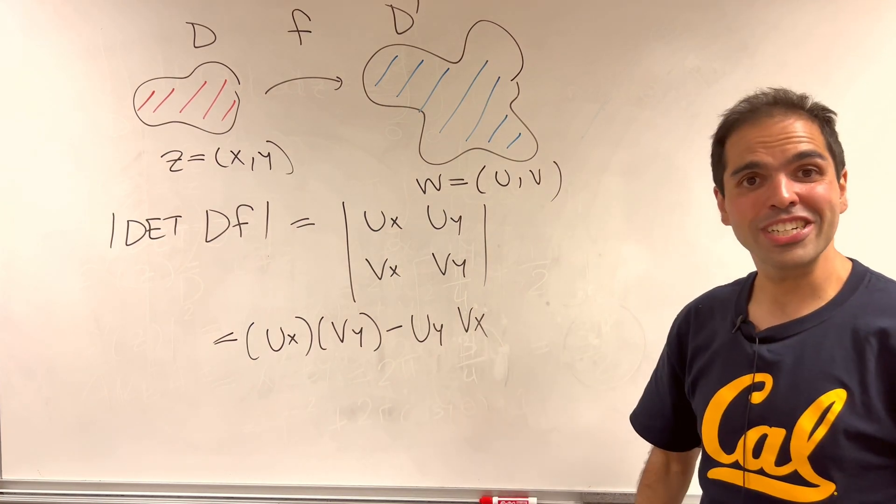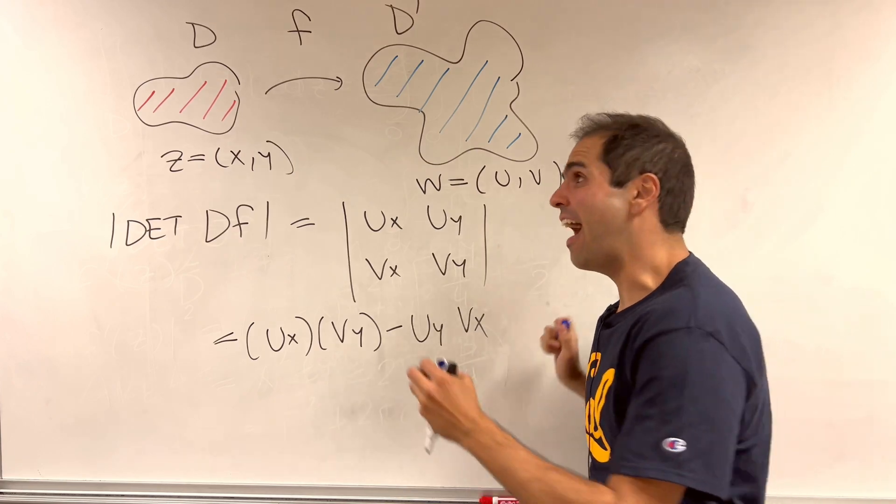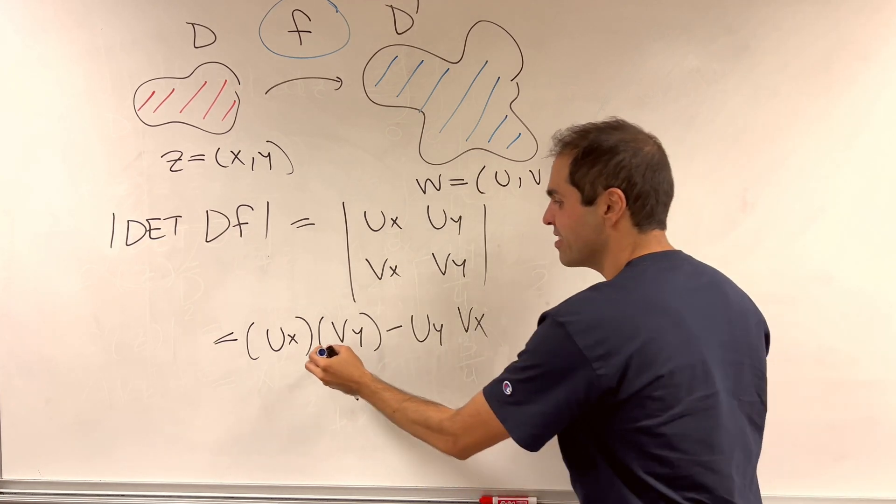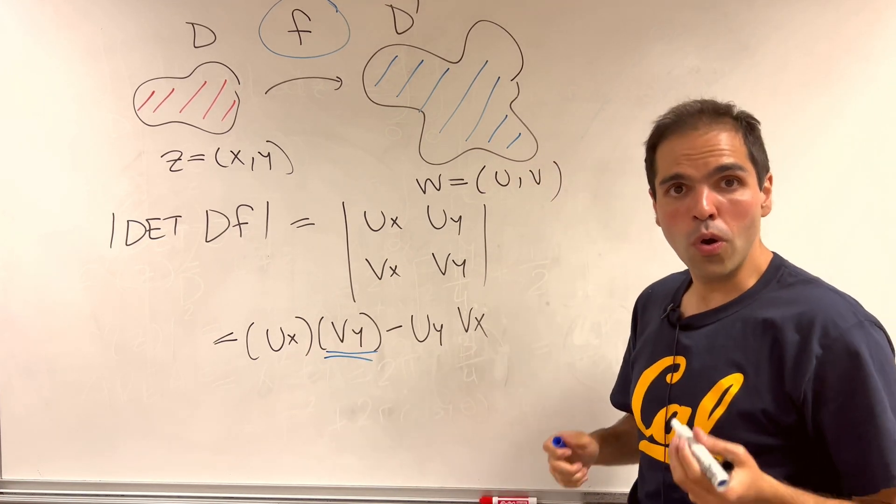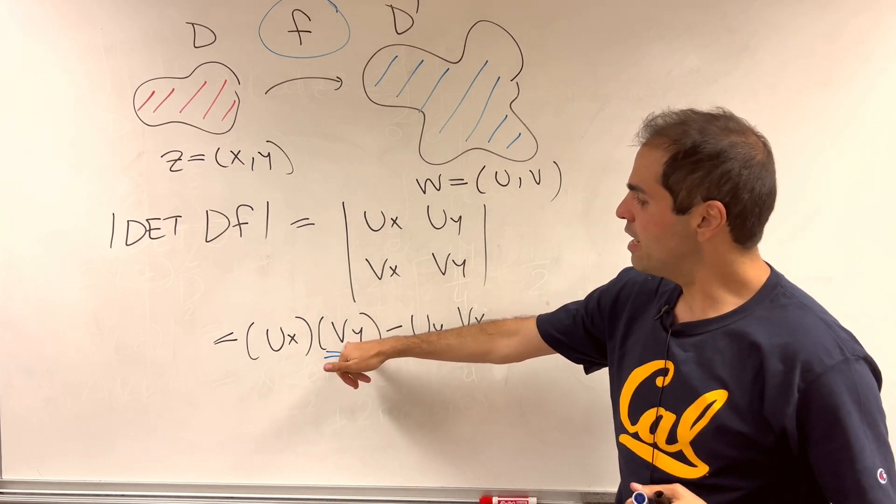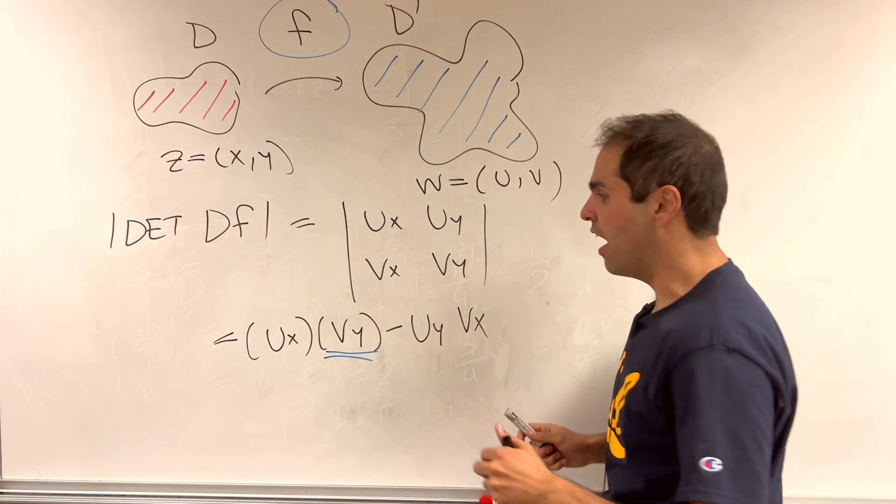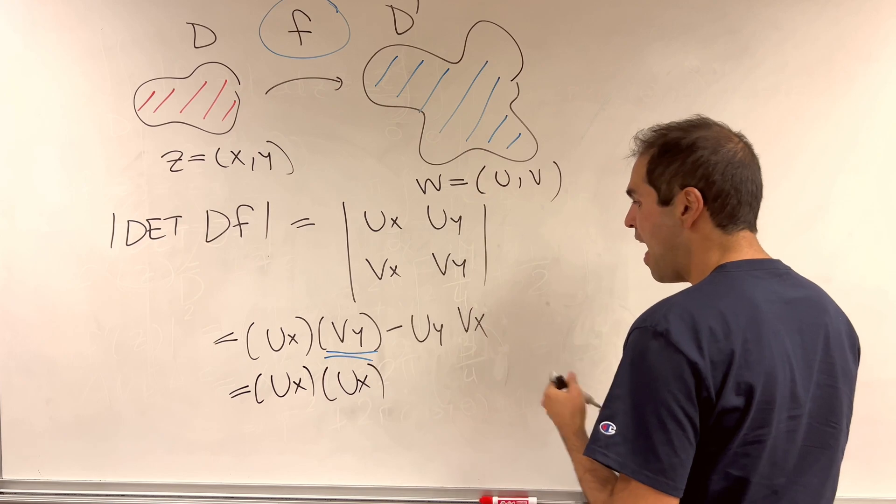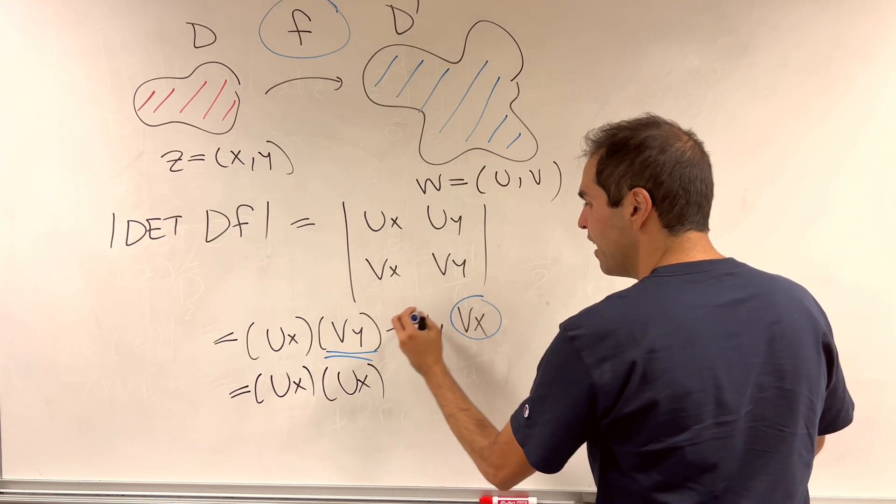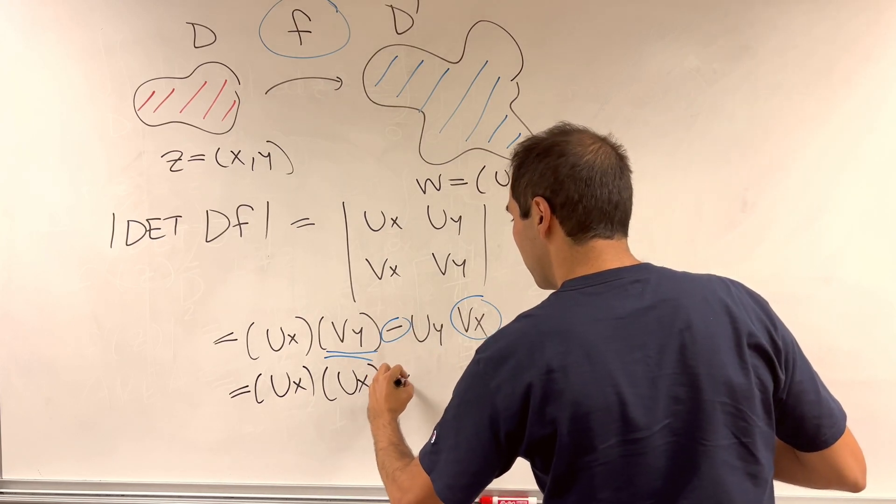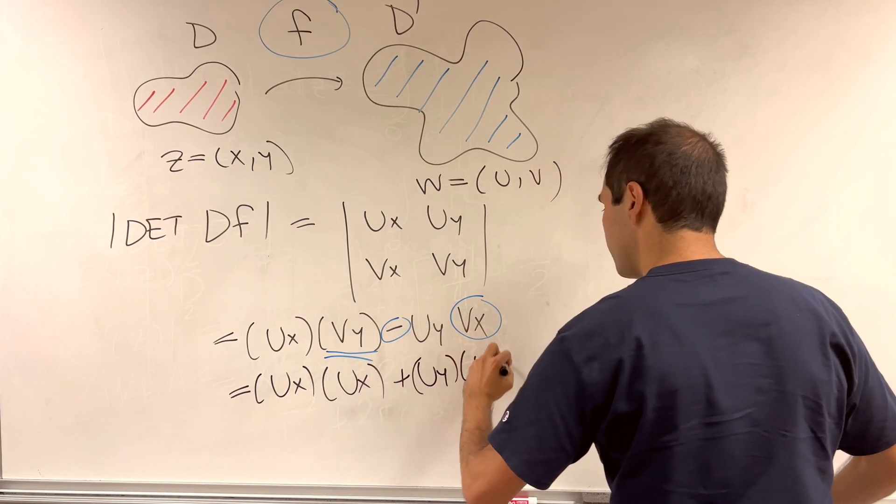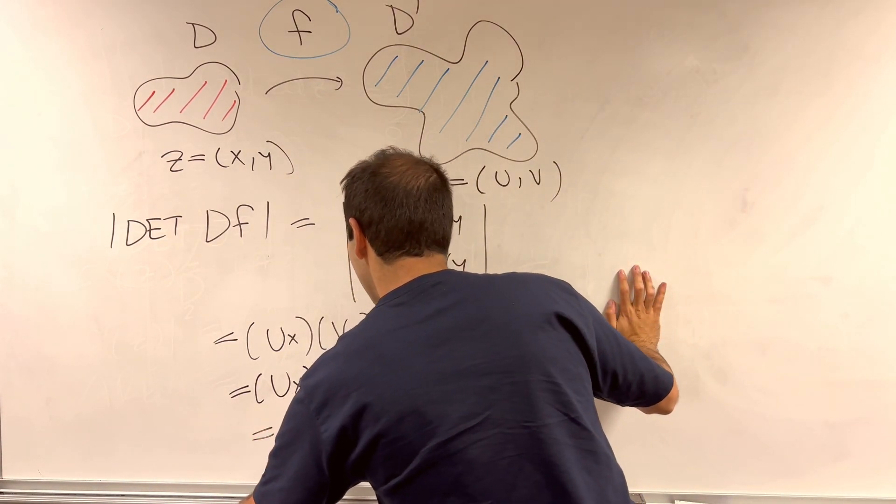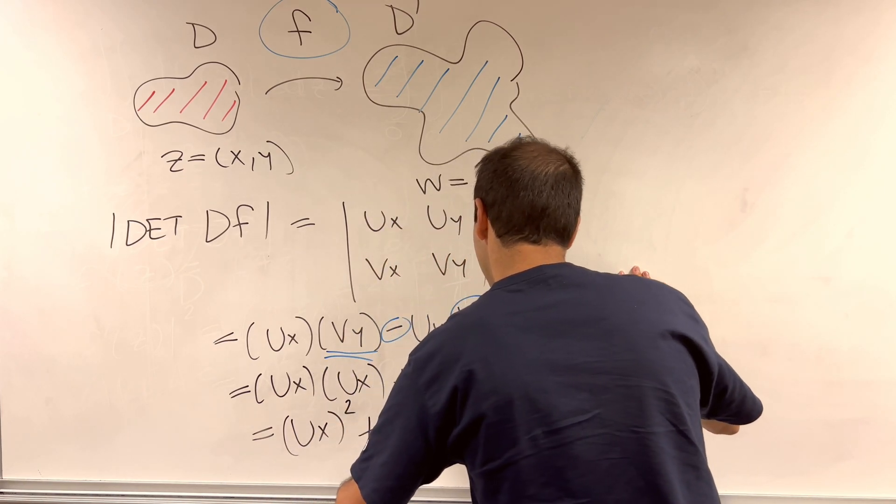But remember, if you actually have a holomorphic function, then the real imaginary parts satisfy what are called the Cauchy-Riemann equations. And in particular, vy, that is the same thing as ux. So ux, ux. And vx is minus uy, so you end up getting plus uy, uy. And therefore, the Jacobian is just ux squared plus uy squared.